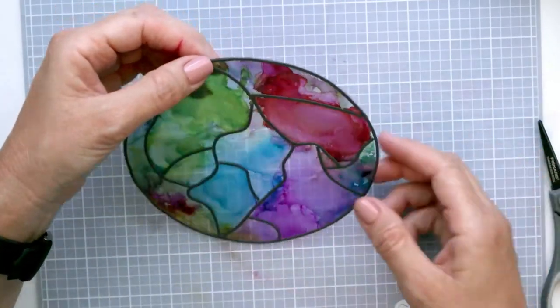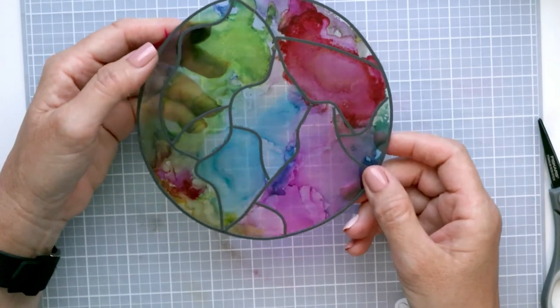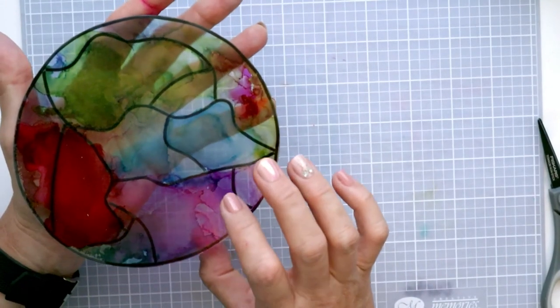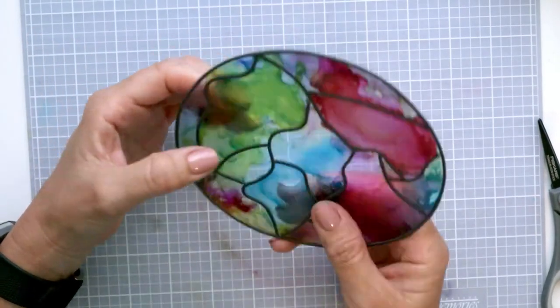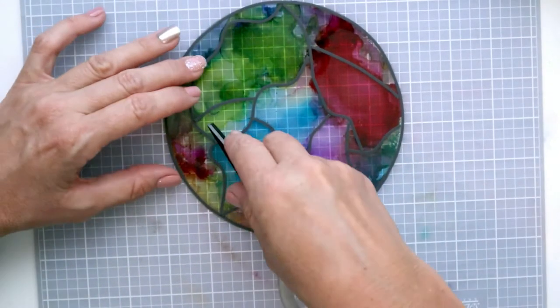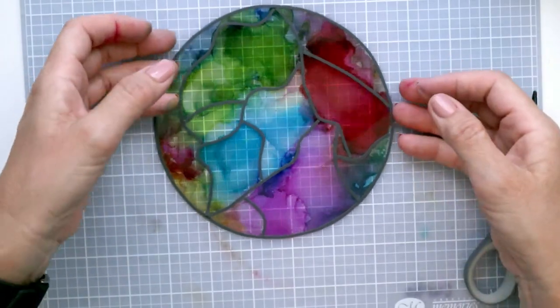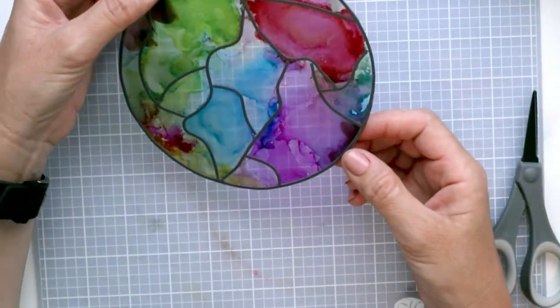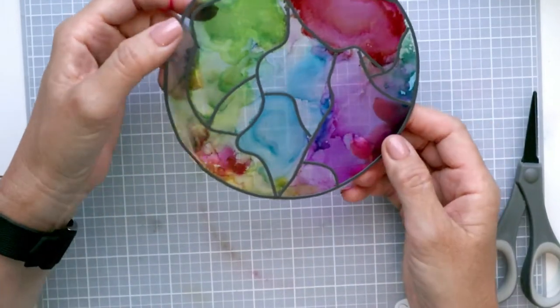I often get asked if things should be sprayed. I've had a couple of other sun catchers that I've done with alcohol ink, and they've been in the window for a little more than a year and they look the same as the first day. So I'm not going to spray with anything. I figured I can always make another one or touch up if necessary, but I'm just going to leave it as is.